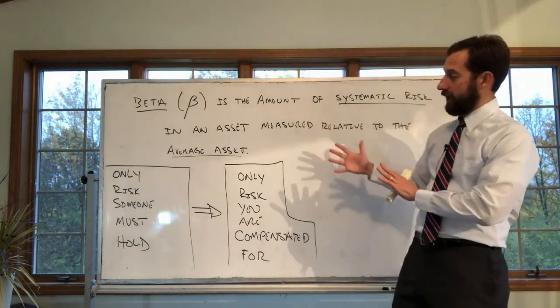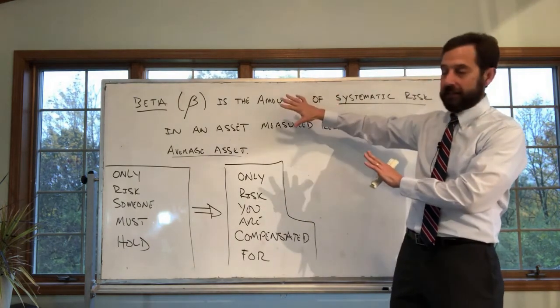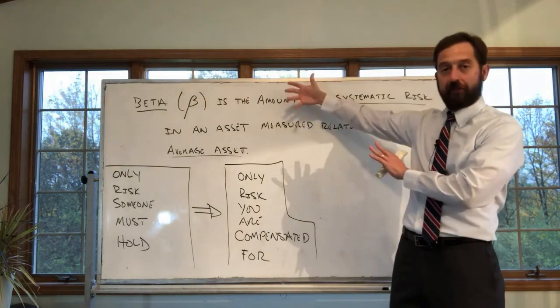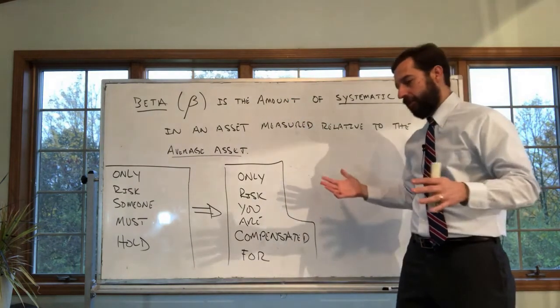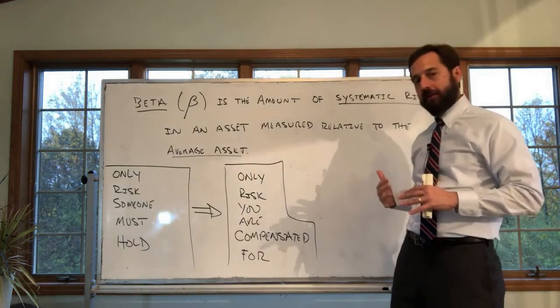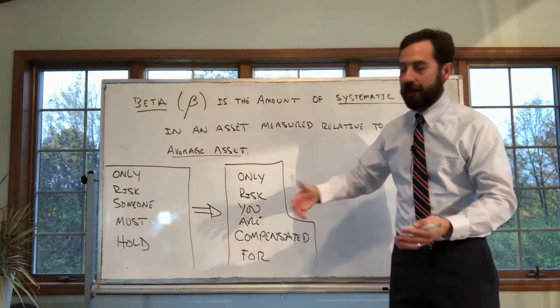What that means is, translated, if you're holding Tesla with more systematic risk, you should have a higher expected return. And if you hold an asset with beta of 0.5, you should have a lower expected return, because Tesla has more systematic risk.